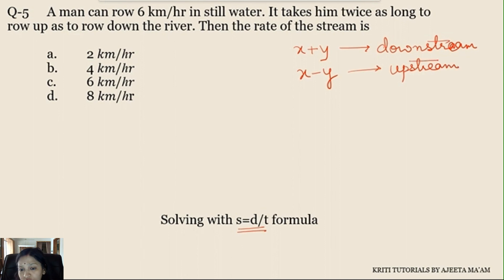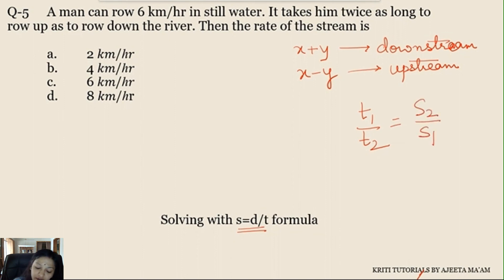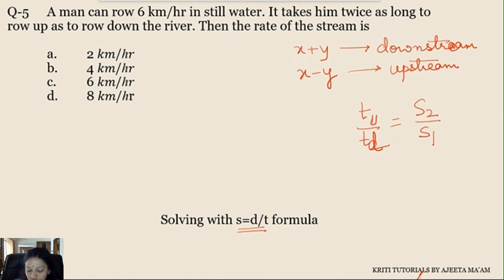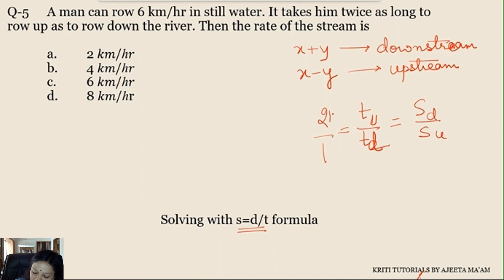You can watch my video on boats and streams for more clarity. The important point here is the time ratio — time is inversely proportional to speed. The problem states it takes twice as long to row upstream as downstream. So if upstream time t1 and downstream time t2 are in ratio 2:1, then the speed ratio becomes 1:2. Taking the ratio factor as k: downstream speed x+y = 2k, upstream speed x-y = k.